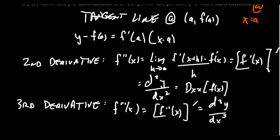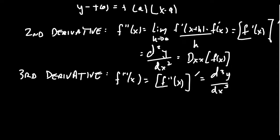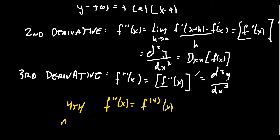When you start taking higher derivatives, the tick marks look like Roman numerals. For the fourth derivative, someone might write f superscript IV, but it's more common to write f with parentheses: f^(4) of x. Generally, the nth derivative is written f^(n) of x — meaning you take the derivative n times.